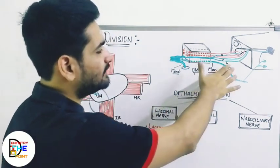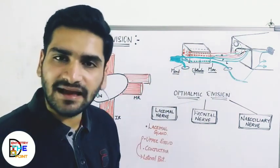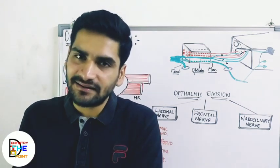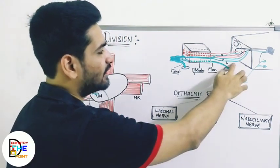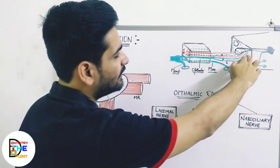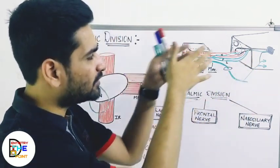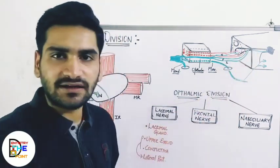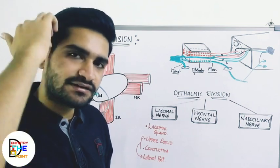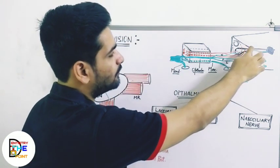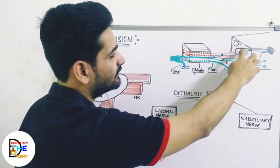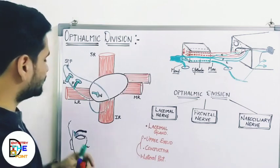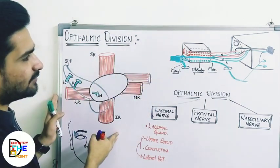Now, where does the lacrimal branch exit? Starting with lacrimal: this branch divides and enters the orbit. To enter the orbit it has to cross through the superior orbital fissure. The superior orbital fissure is just behind the eyeball. So it enters through the superior orbital fissure — but which part of it?